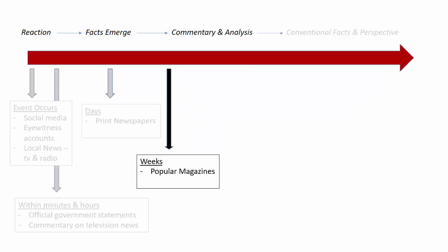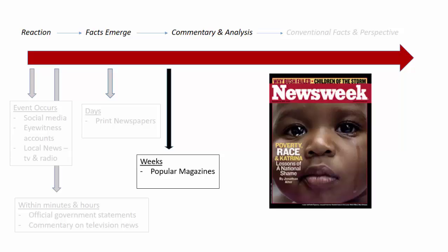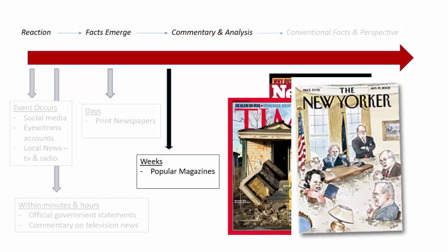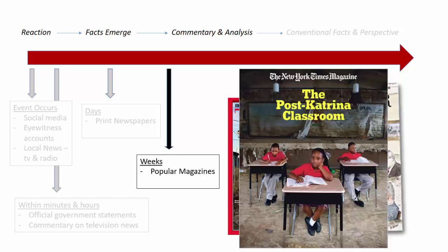Weeks later, in-depth magazine articles appear. Journalists have more time to fact check, verify sources, and provide analysis and commentary. Magazine articles are written for the general population and may be thematic in scope, concentrating on one area within a larger story.